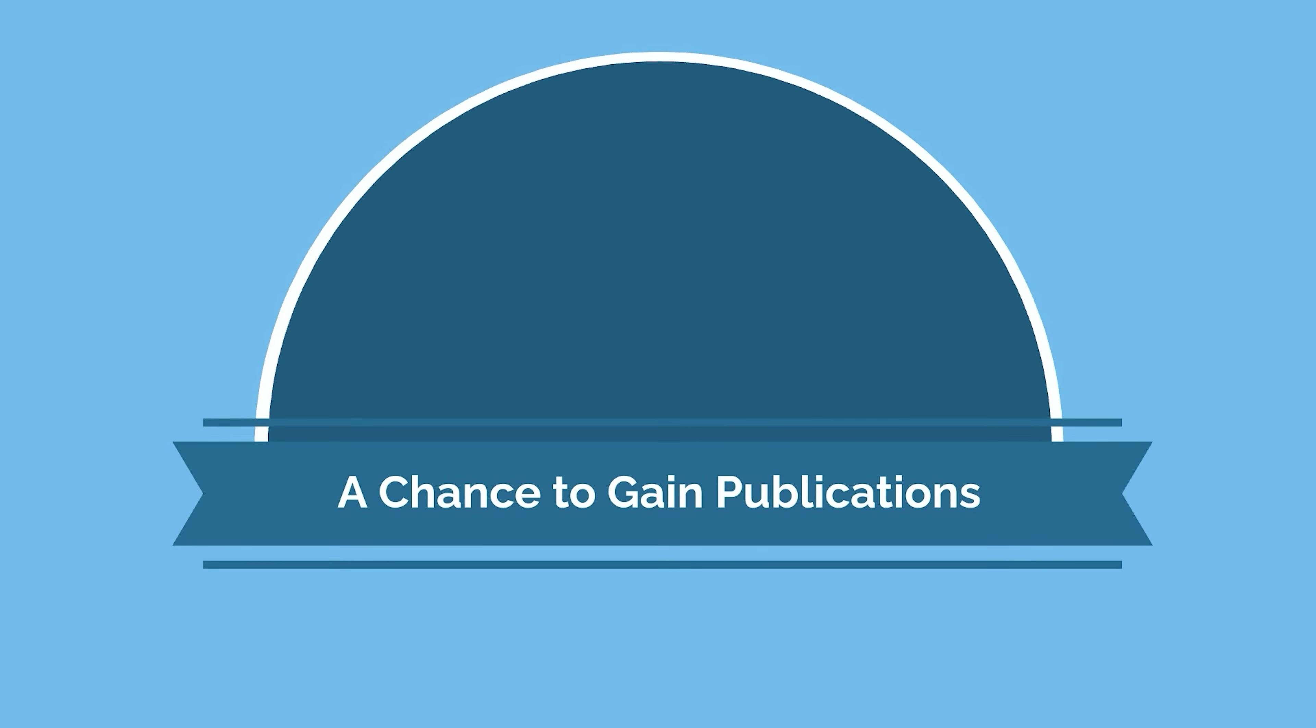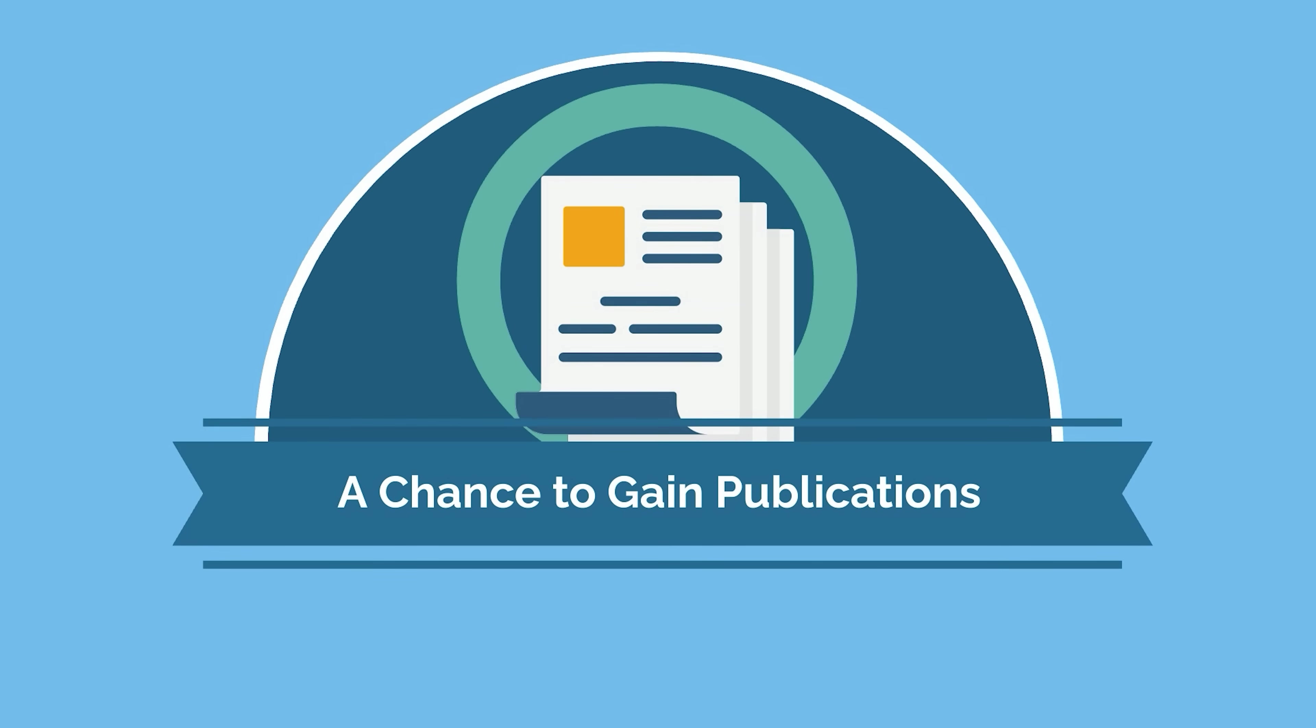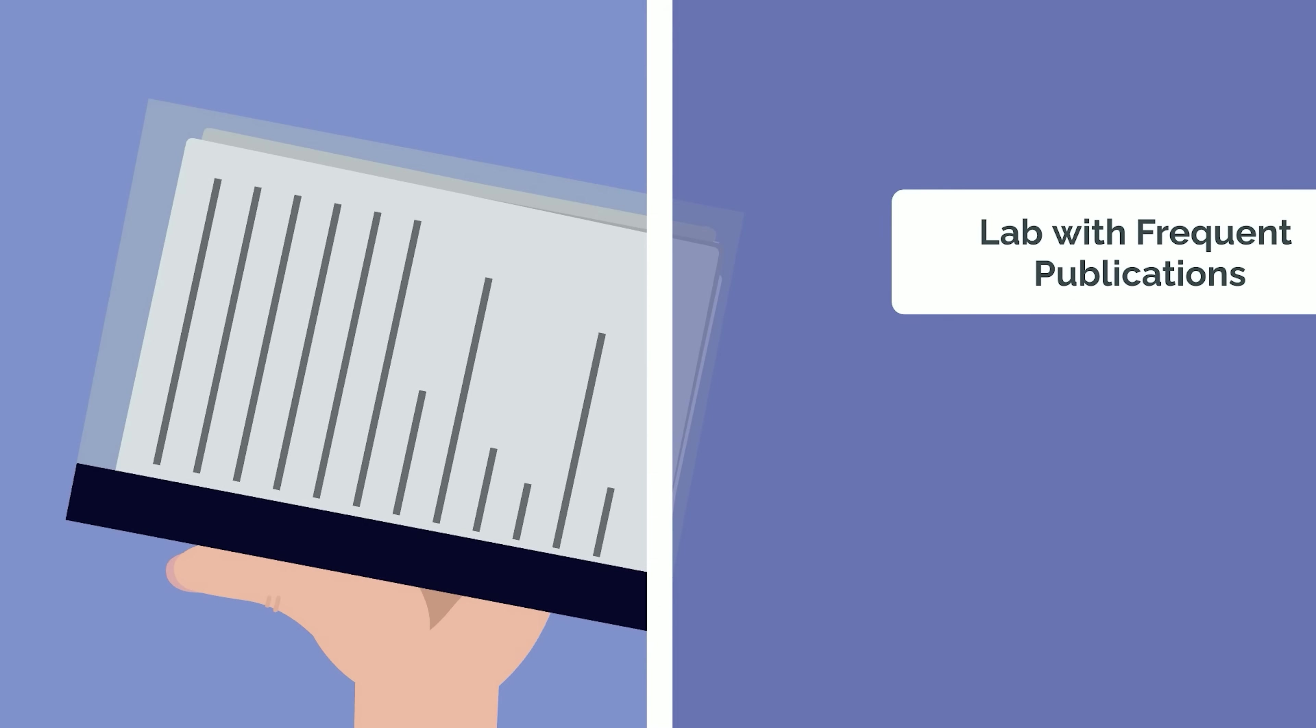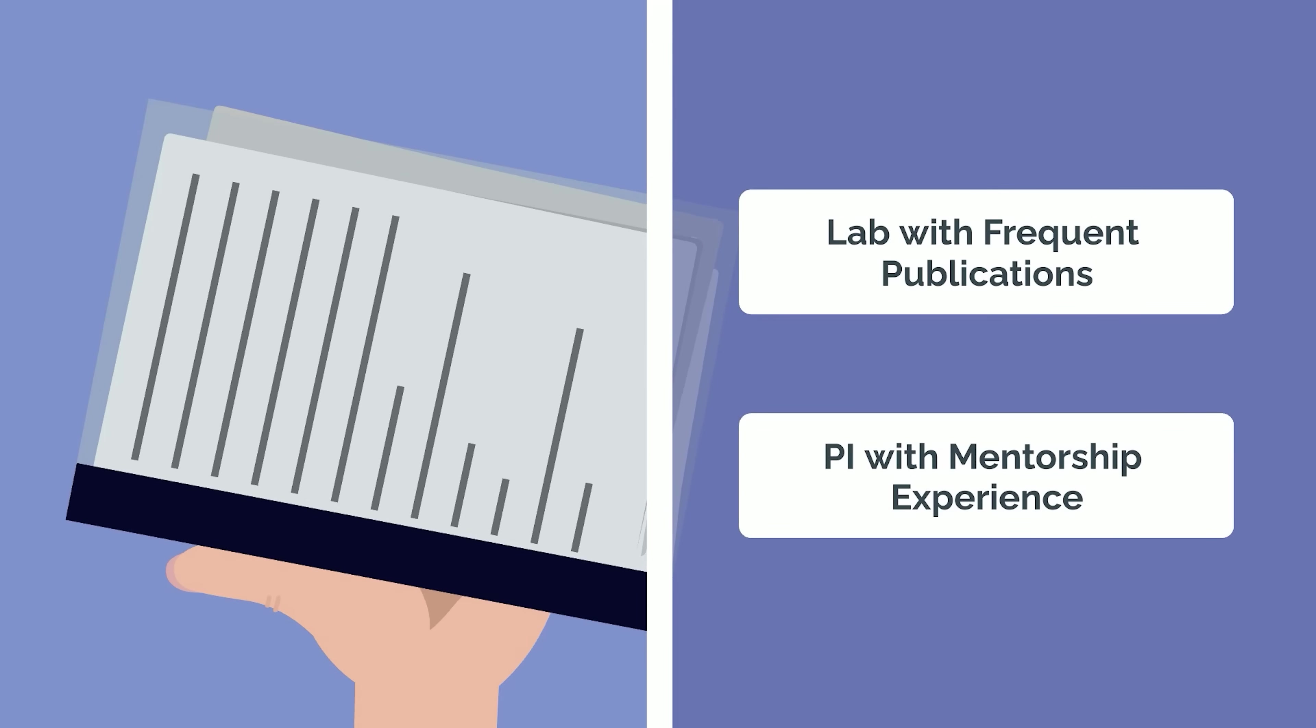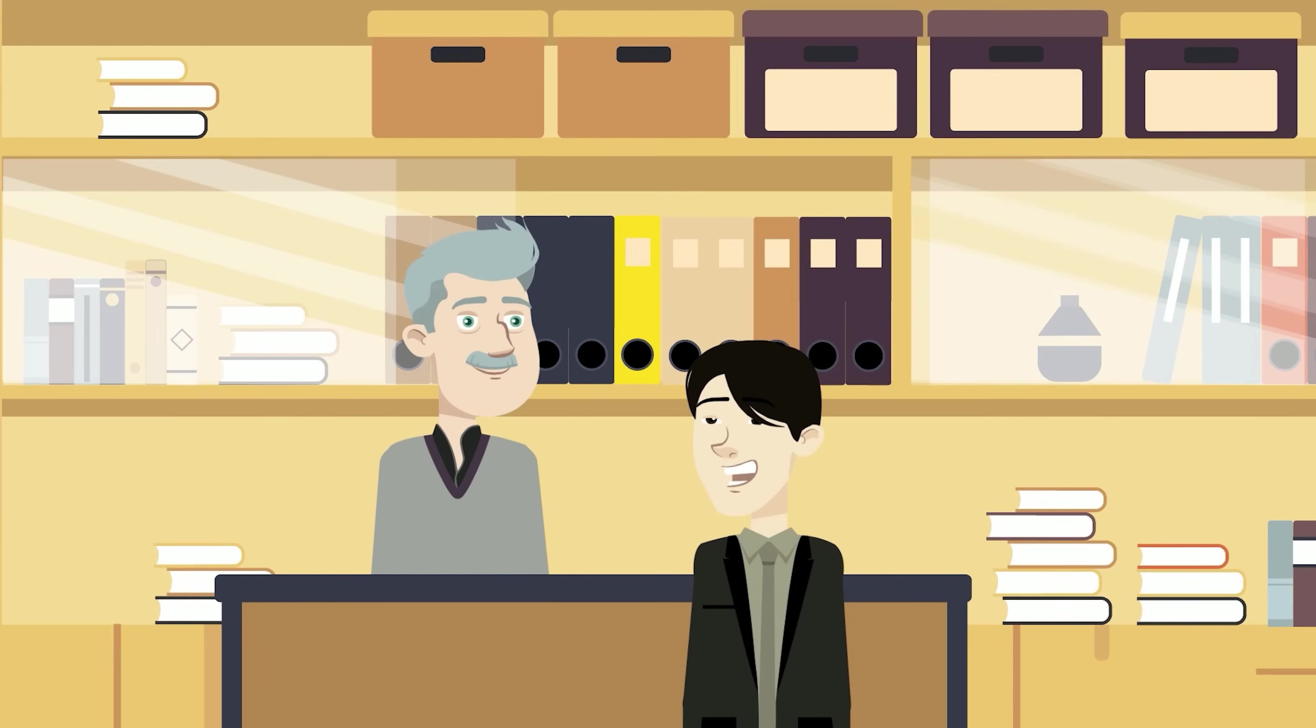Next, extracurricular research is a chance to gain publications. While not necessary, a publication can be a huge benefit to your application, as publications are a quantifiable metric of your success as an undergraduate. If publishing is a priority for you, look for a lab that publishes frequently. Find a PI with a proven track record of working with undergraduates and helping them get published. Express your overall goals to your PI from the beginning.